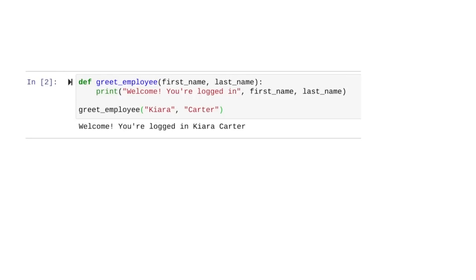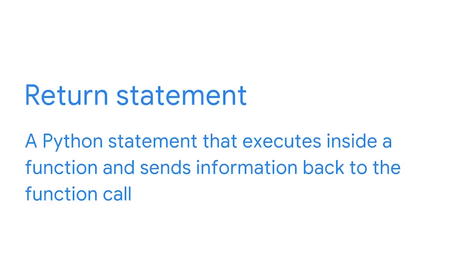As we just explored, using more than one parameter just requires a few adjustments. We can do more than pass information into a function — we can also send information out of one. Return statements allow us to do this. A return statement is a Python statement that executes inside a function and sends information back to the function call.